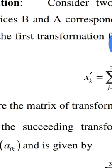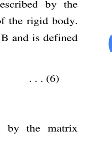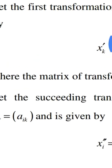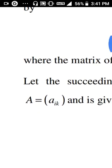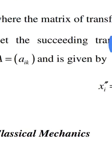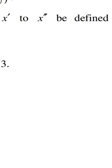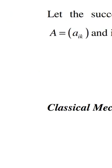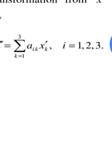Let the first transformation from x to x' be denoted by matrix B, defined as: x_k' = summation of b_kj * x_j, j = 1 to 3, where the matrix of transformation is B = [b_kj]. Let the succeeding transformation from x' to x'' be defined by matrix A = [a_ik], given by: x_i'' = summation of a_ik * x_k', k = 1 to 3, i = 1 to 3.